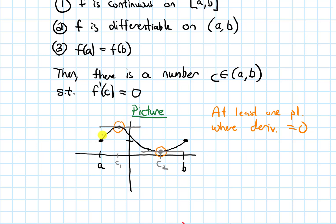That's guaranteed to happen as long as my function is continuous the whole way on the closed interval. The differentiability condition is also important because it guarantees I don't have something like a sharp corner. And that is Rolle's Theorem.